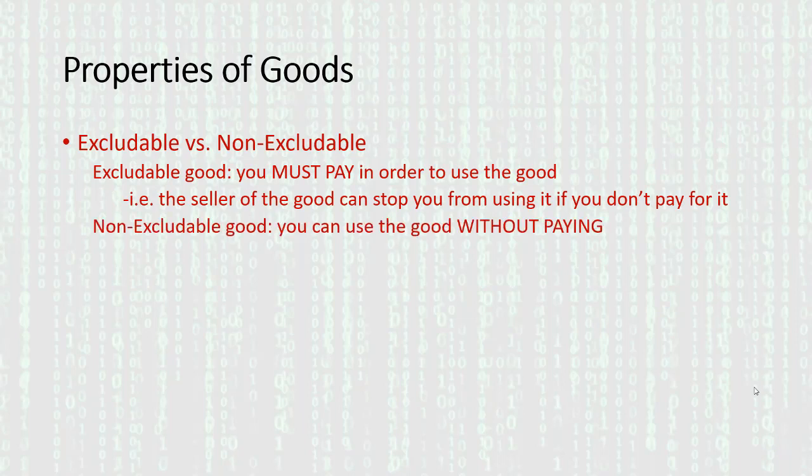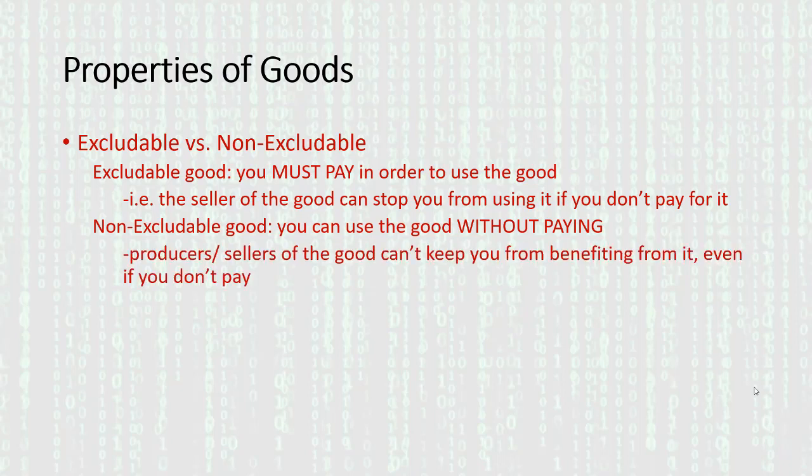On the flip side, a non-excludable good means the opposite — you can use the good without paying. Going back to the radio broadcast example: I don't have to pay for the radio broadcast. I have to pay for a radio set, but I don't have to pay for the broadcast itself. Producers and sellers of the good can't keep me from benefiting from it even if I don't pay at all.